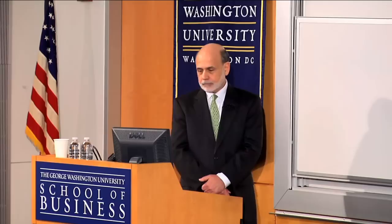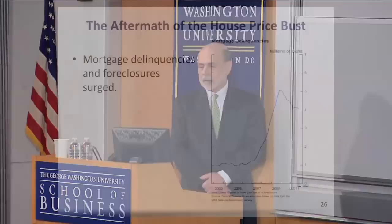Given the decline in house prices and the fact that a lot of people borrowed more than they could afford, the decline also led to a big increase in mortgage delinquencies — people not paying on time — and ultimately banks taking over the property through foreclosure and then reselling it. In 2009, there were more than 5 million mortgages in delinquency, which is almost 10 percent of all mortgages — a very, very high rate.